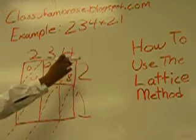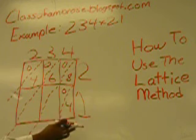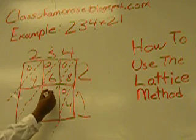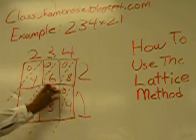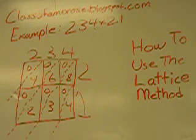Then you go to the four and one, so zero up here and four down there. Three and one, zero up here and three down here. Two and one, so zero up here and two down here.